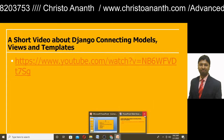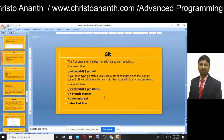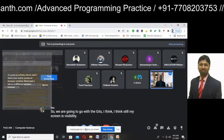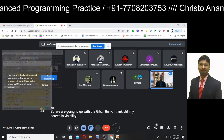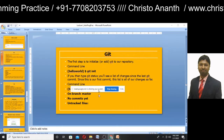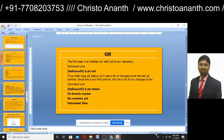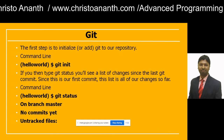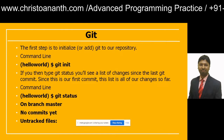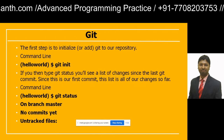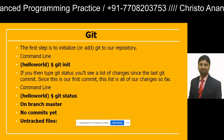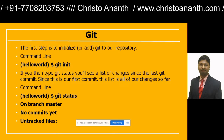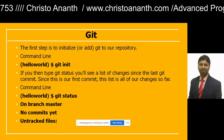Now we go with Git. You have to initialize Git in our repository. In the command line, within the hello_world app, type: dollar git init. Then type git status to see the list of changes since the last git commit. Since this is the first commit, the list shows all changes as untracked files.